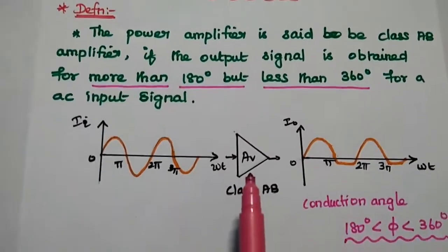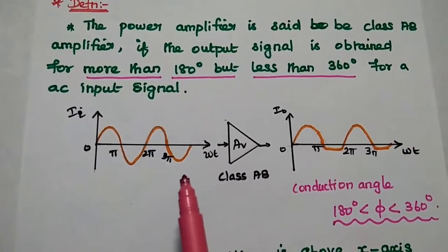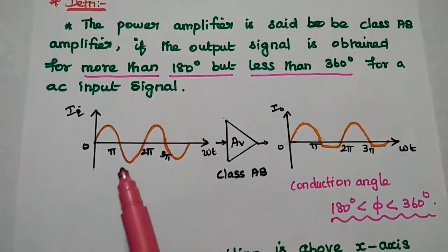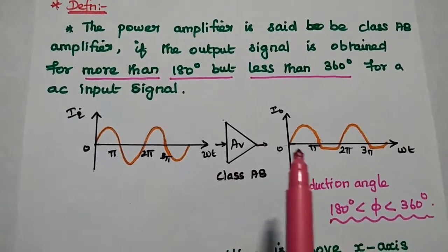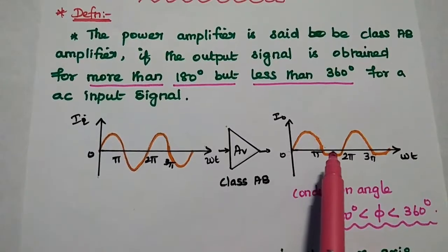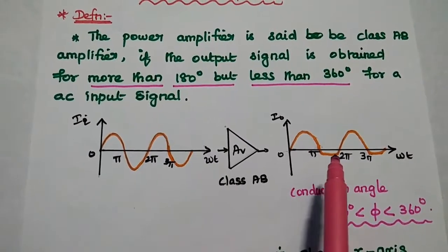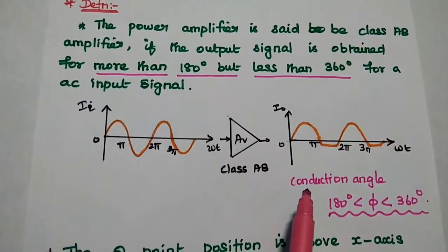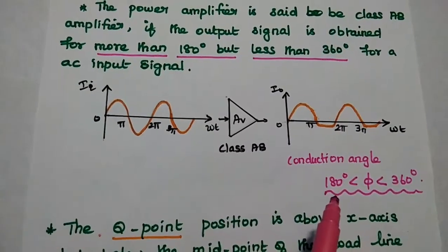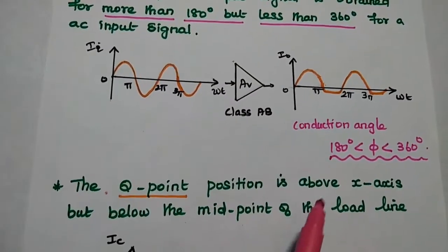This is the diagram to represent the Class AB amplifier. In this diagram, we can give the full cycle of AC input signal and get the output for more than 180 degrees but less than 360 degrees. In this Class AB amplifier, the conduction angle is between 180 degrees and 360 degrees.